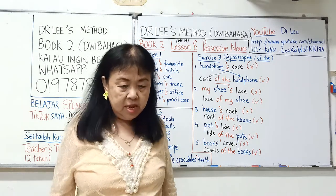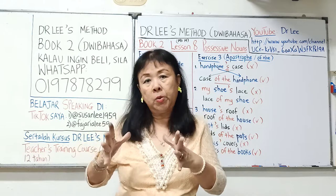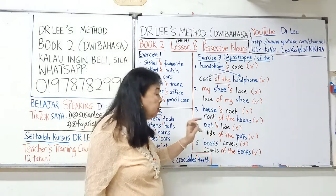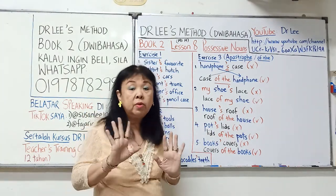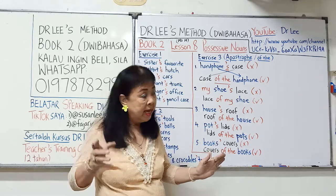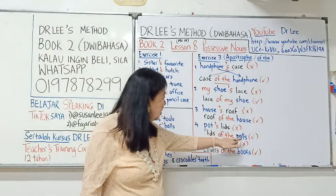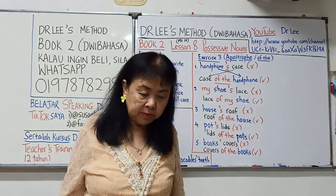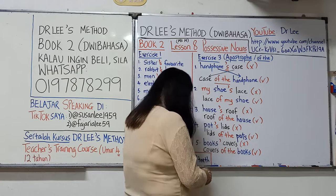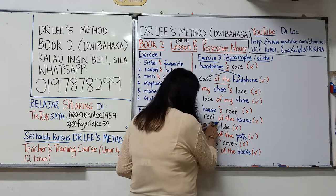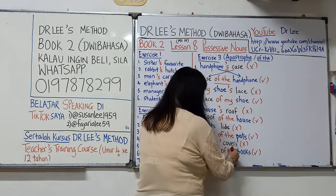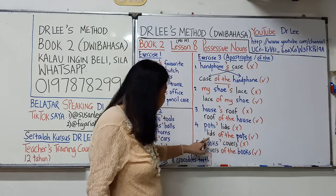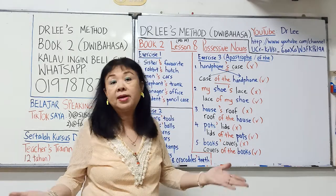Number 4: 'These are the pot's lids' — salah, sebab pot itu tidak bernyawa. Kaedahnya sama: 'lid' pindah ke depan, 'pot' pindah ke belakang, apostrophe S digantikan dengan 'of the'. Jawapan sudah tepat: 'These are the lids of the pot.'